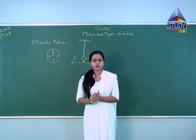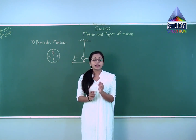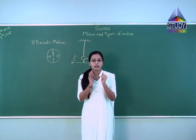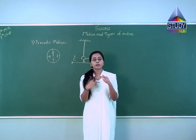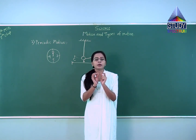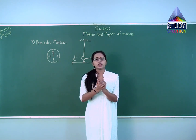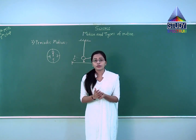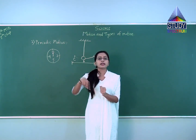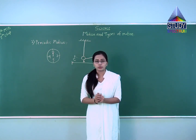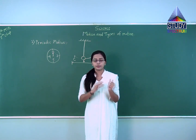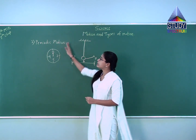Periodic motion can be linear, circular, or vibratory motion, but the condition is that after some time, the motion must be repeated. Examples include the motion of the moon around the earth, the motion of the earth around itself completing one rotation in 24 hours — which causes day and night — and the motion of earth around the sun taking 365 days to complete one circle. All these are examples of periodic motion, where the motion is repeated after a certain time.